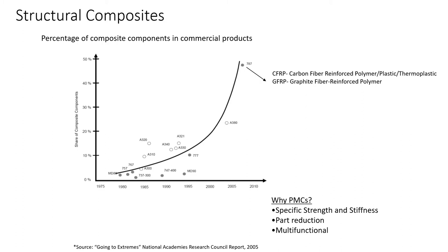Fiber reinforced plastic, or FRP, also called fiber reinforced polymer, is a composite material made of a polymer matrix reinforced with fibers. The fibers are usually glass in fiberglass, carbon in carbon fiber reinforced polymer, aramid or basalt. Rarely, other fibers such as paper, wood or asbestos have been used. The polymer is usually an epoxy, vinyl ester or polyester thermosetting plastic, though phenol formaldehyde resins are still in use.